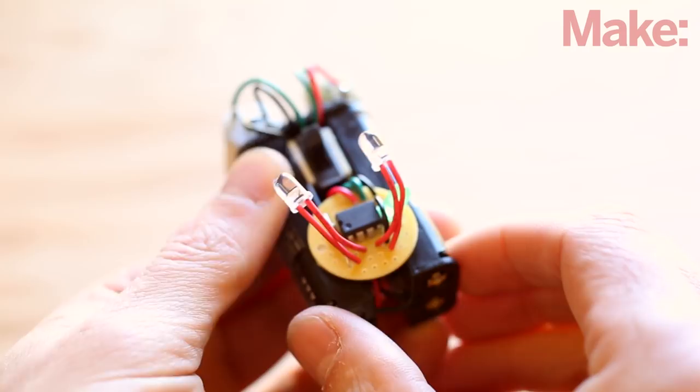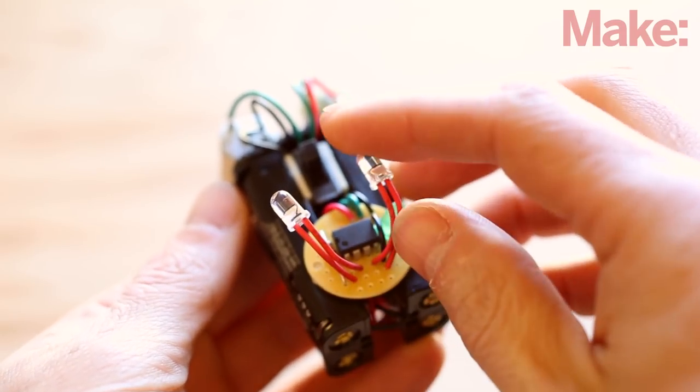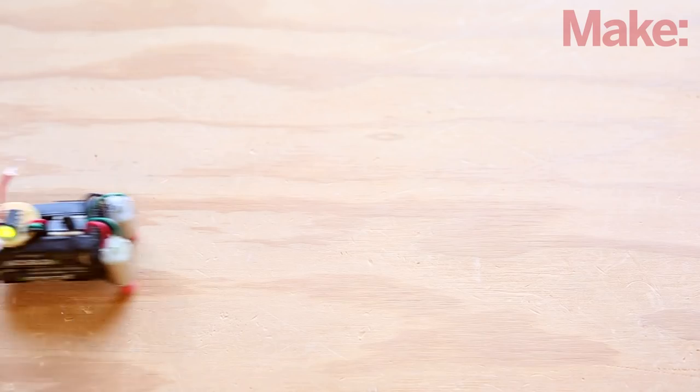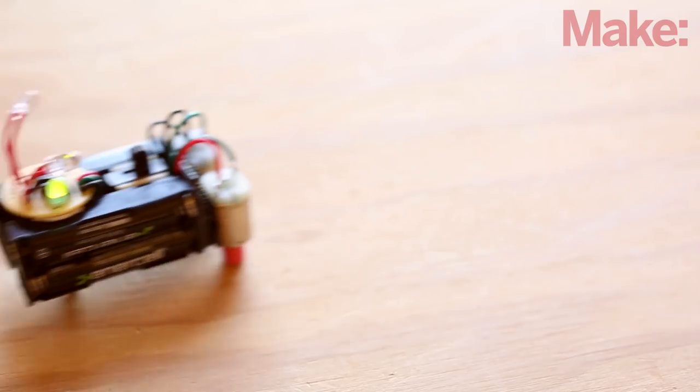The IR detector eyes can be adjusted left, right, up, and or down to bias the bot's steering in one direction or the other. A bot that prefers turning one direction or the other can often be corrected just by adjusting the eye stalks to compensate.